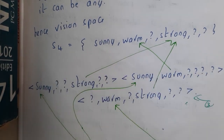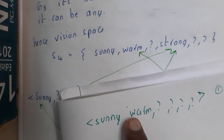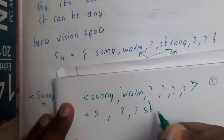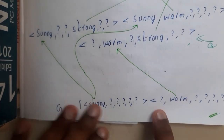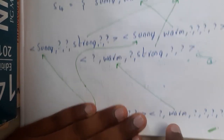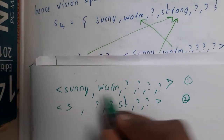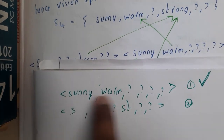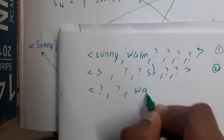Continuing similarly — sunny is done, warm is already written, so let us take strong: sunny, question mark, question mark, strong, question mark, question mark — that is your second version space. For the third, take the next hypothesis: warm paired with sunny — but sunny and warm is already there, so we skip it to avoid repetitions. The last combination: warm with strong — question mark, question mark, warm, and so on — that gives your remaining version space.